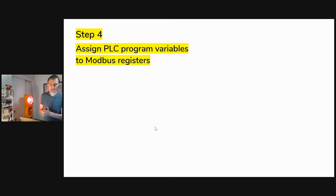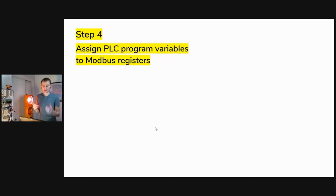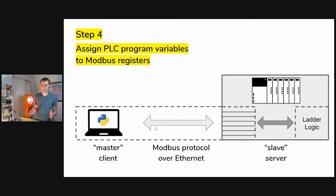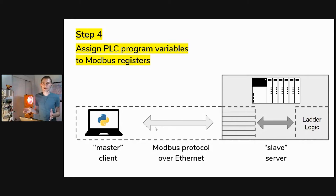Step four: assign the PLC program variables to Modbus registers. Modbus is a technique and protocol that's almost as old as PLCs, and it's a way for PLCs to share the content of variables in their code with any other device on the network — another PLC, a server, or my laptop, which is what we're doing today.